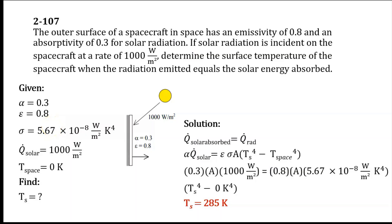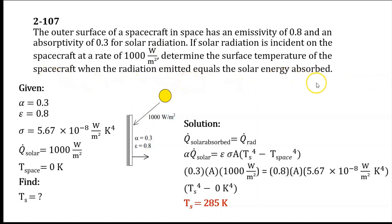Hi everyone. In this video we will solve an example problem in Chapter 12, which is about heat transfer by radiation. The outer surface of a spacecraft in space has an emissivity of 0.8 and an absorptivity of 0.3 for solar radiation. If solar radiation is incident on the spacecraft at a rate of 1000 watts per square meter, determine the surface temperature of the spacecraft when the radiation emitted equals the solar energy absorbed.